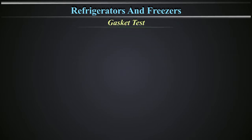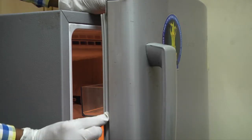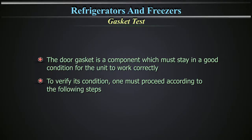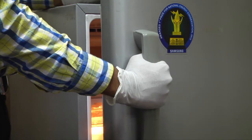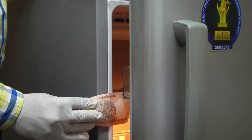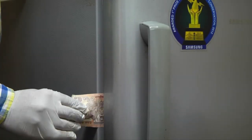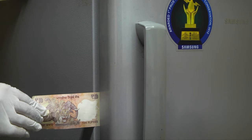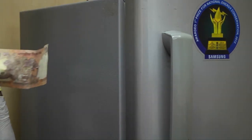The door gasket is a component which must stay in good condition for the unit to work correctly. To verify its condition, proceed as follows: 1. Open the door. 2. Insert a strip of paper of about 5 cm in width between the door gasket and the edge of the refrigerator's body where the gasket is housed. 3. Close the door. 4. Pull the paper gently from the exterior. The paper must put up resistance when being moved outwards. If the paper can be moved without resistance, the gasket must be substituted.